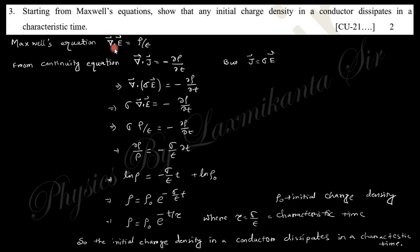Next question: Starting from Maxwell's equations, show that any initial charge density in a conductor dissipates in a characteristic time. From Maxwell's equation: divergence of E equals rho over epsilon naught. From continuity equation: divergence of J equals minus del rho by del t. Put J equals sigma E, so divergence E, and this is rho by epsilon. From here you can easily find out this equation and you can see this is exponential decay with its characteristic time. This is actually a question from Calcutta University 2021.